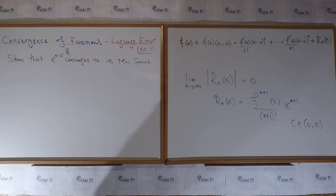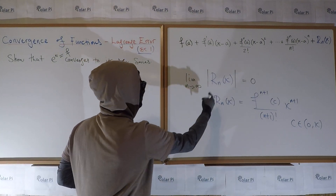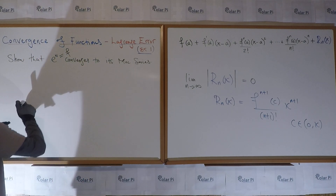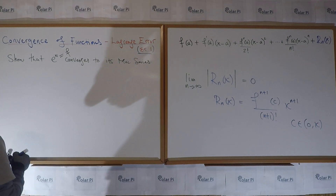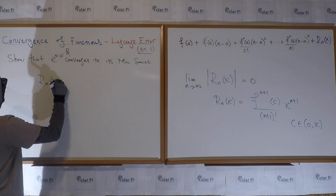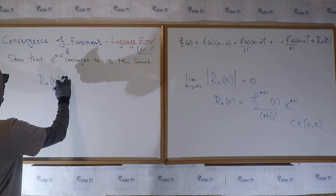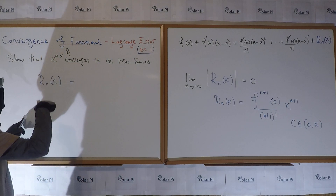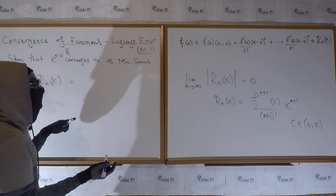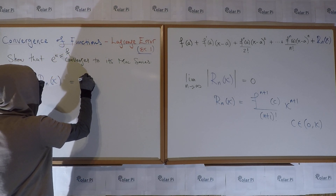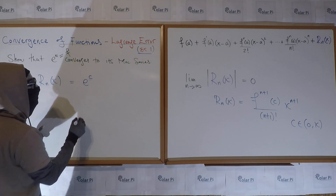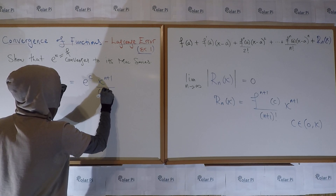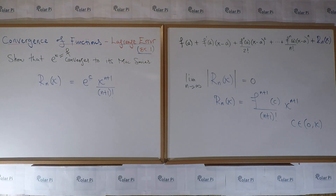Adapting this to the situation at hand and looking at |R_n|: since f is e^x, the (n+1)-th derivative is e^x itself, evaluated at c, giving e^c. So |R_n| equals |e^c · x^(n+1) / (n+1)!|, and we need to show this goes to zero.